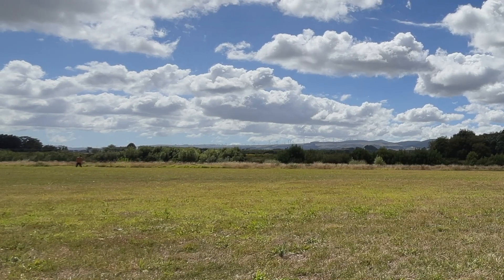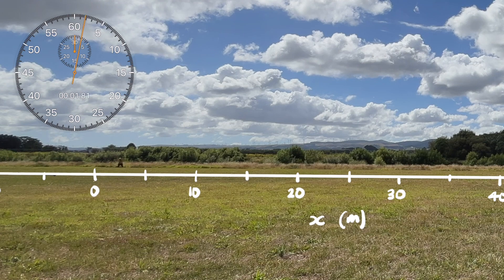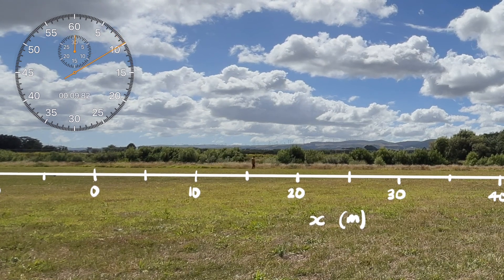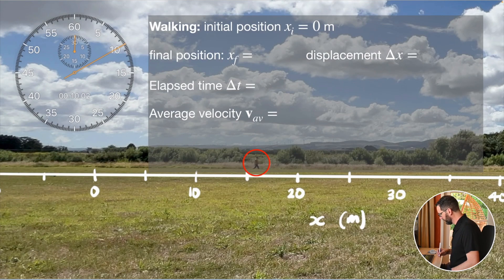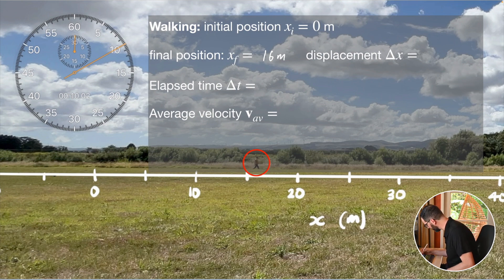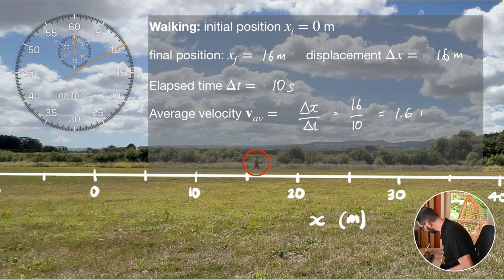What I'm going to do is start the clock and we'll see how far I can walk in 10 seconds. Starting now. So this is my normal walking speed — walking along, seeing how far I can go in 10 seconds. Okay, so let's figure out our average velocity. Our initial position is zero meters, final position looks like about 16 meters, which means my displacement is final minus initial: plus 16 meters to the right. My elapsed time was 10 seconds, so my average velocity is delta x over delta t — 16 over 10 — which is 1.6 meters per second.